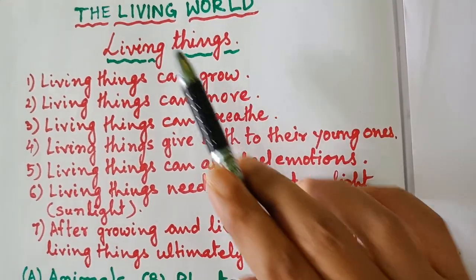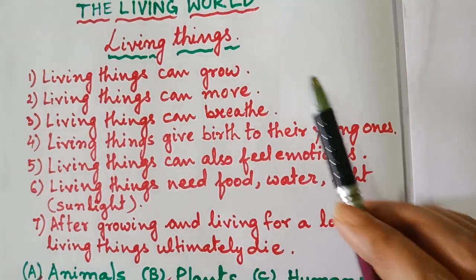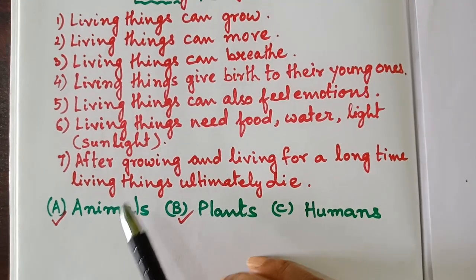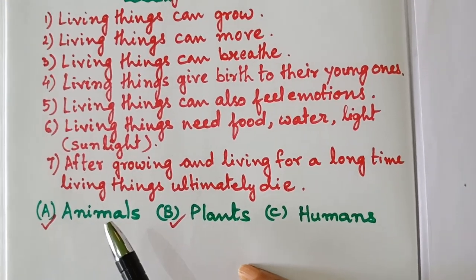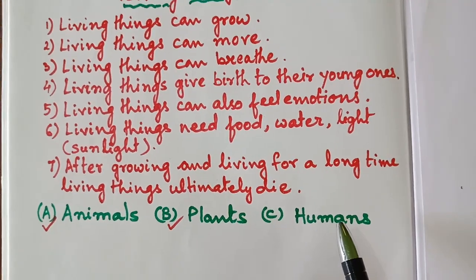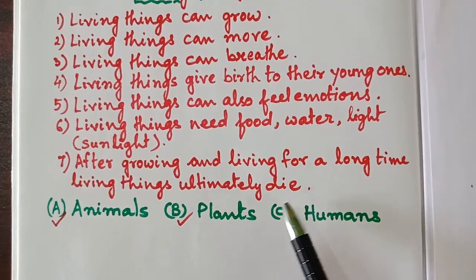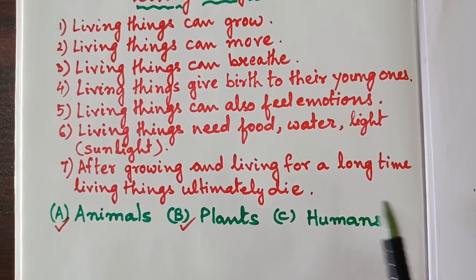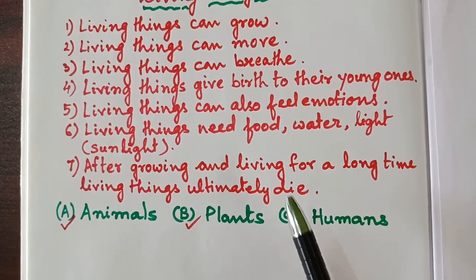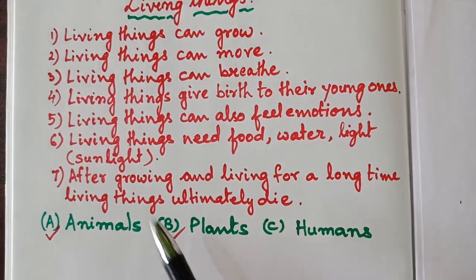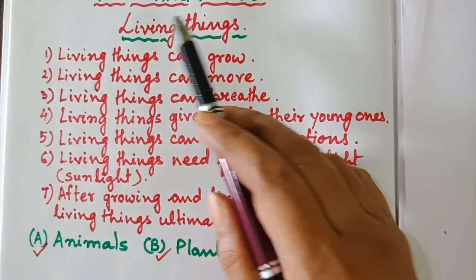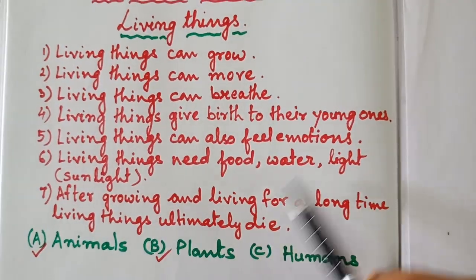Under living things, they include animals, plants, and humans. About humans, we all know. We will discuss about animals and plants in living things.